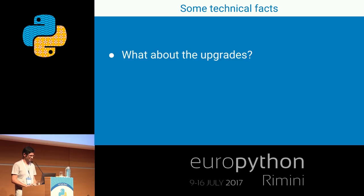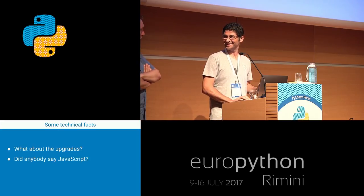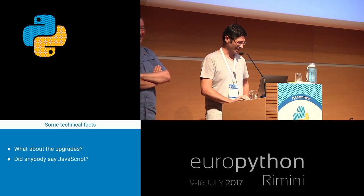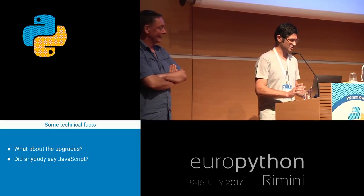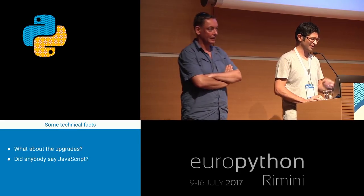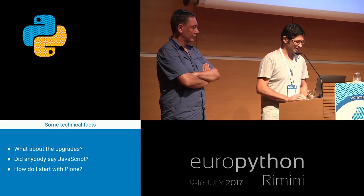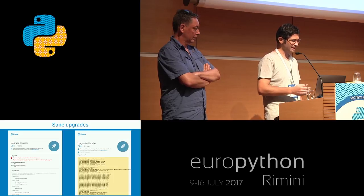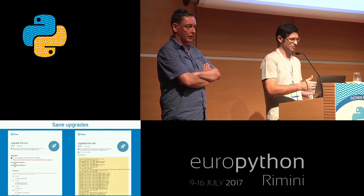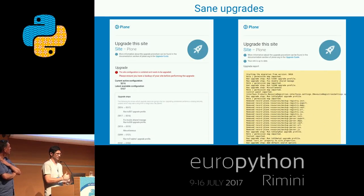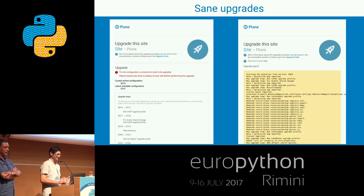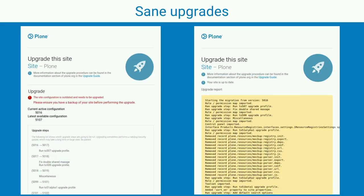Some technical facts: we care very much about upgrades. We have machinery in place that allows upgrade steps to update your database to the latest version of your code. There is a dry-run mode so you can test it before things go wrong. It's always suggested to do that on a staging server before production. Add-ons can also use this machinery to provide their own upgrades.